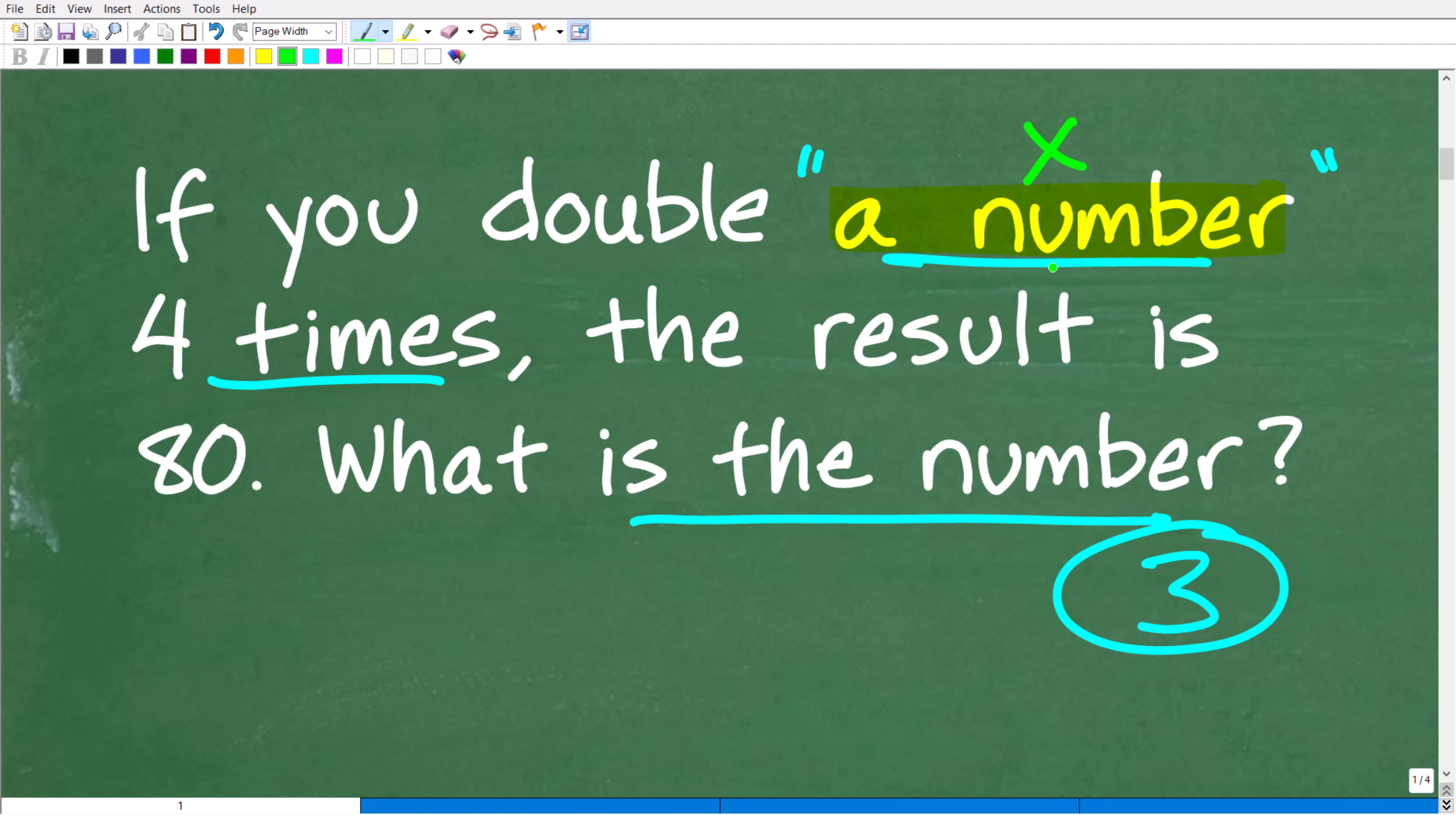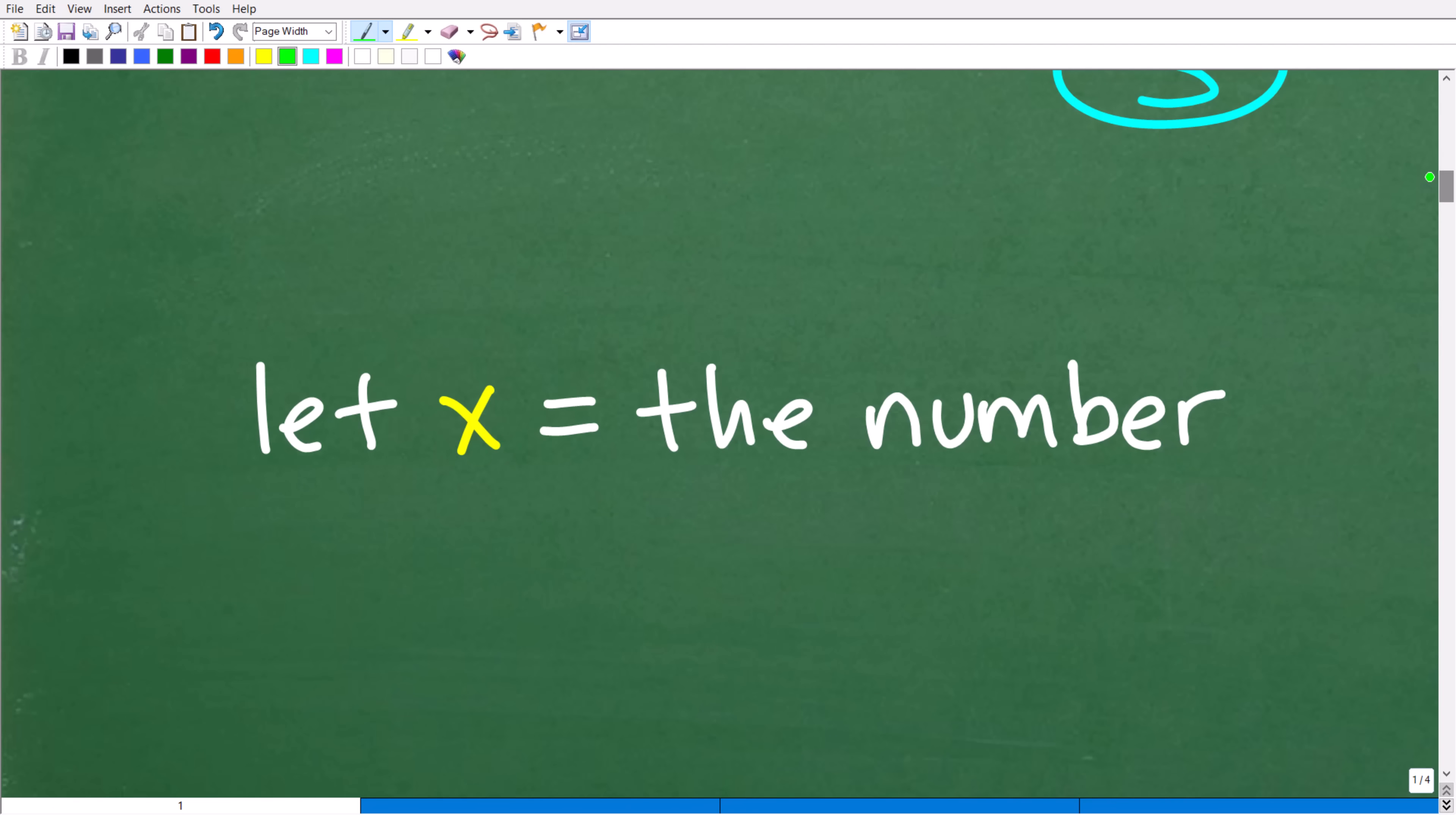So, I'm going to let x represent this particular number. And from there, we need to understand the situation. Ultimately, if I have a variable, the only way I can solve for that variable is to build an equation. So, let's go ahead and model the problem by first establishing that we're going to let x equal this quote-unquote number.